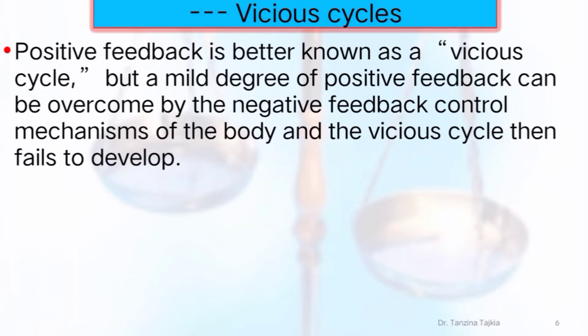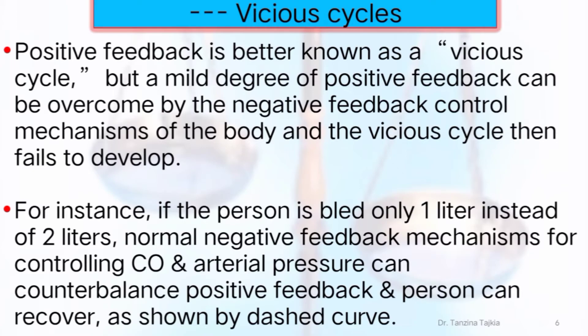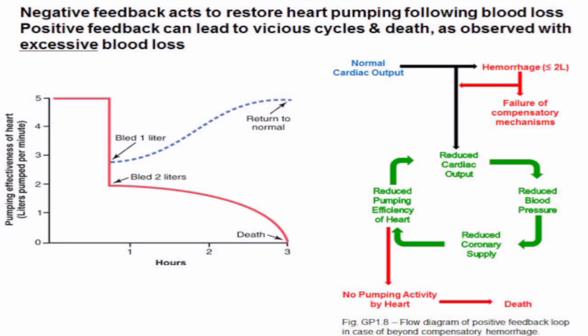Positive feedback is better known as a vicious cycle, but a mild degree of positive feedback can be overcome by the negative feedback control mechanisms of the body, and the vicious cycle then fails to develop. For instance, if the person bleeds only one liter instead of two liters, the normal negative feedback mechanism for controlling cardiac output and arterial pressure can counterbalance the positive feedback, and the person can recover, as shown by the dashed curve in the figure.